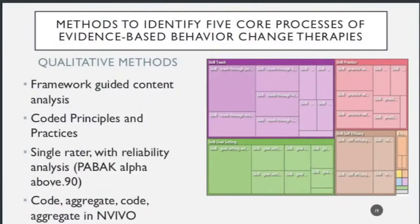Looking at this figure, you can see examples of practices related to skills training. Color codes the different themes: practices related to teaching, practices related to engaging in practice (the applied component), practices related to goal setting, and practices related to self-efficacy. Box size shows how common a particular practice is in the source data — the bigger the box, the more often it came up.